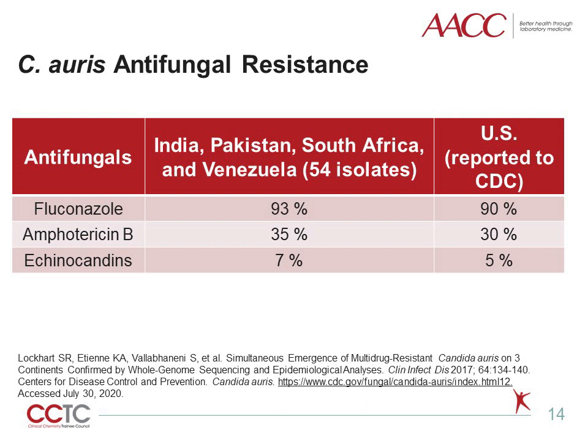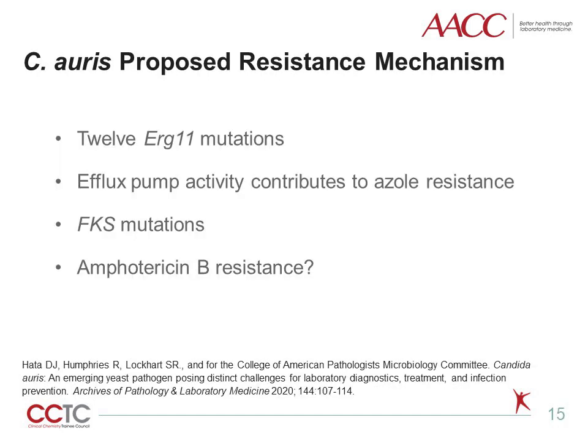Chicago isolates tend to be less resistant compared to New York. Among U.S. isolates, 41% were resistant to at least two drug classes, and two isolates were pan-resistant. The resistant mechanism of C. auris remains under investigation; however, there have been some clues to propose possible pathways. For the triazoles, 12 ERG-11 mutations have been identified. Three of these mutations have been directly linked to drug resistance, specifically to fluconazole in C. albicans. Efflux pump activity has been speculated to further contribute to triazole resistance, though the extent of this contribution remains unknown.